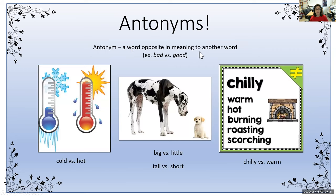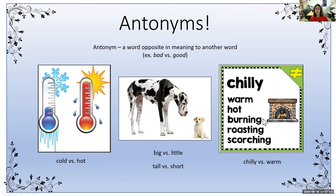Antonyms, in contrast, are words opposite in meaning to another word — such as bad versus good, cold versus hot, or big versus little. See how these dogs are so very different from each other? So those words are antonyms. Or tall versus short. We also have some antonym examples: chilly and warm, chilly and hot, chilly and burning, chilly and roasting, chilly and scorching — those are all antonyms.